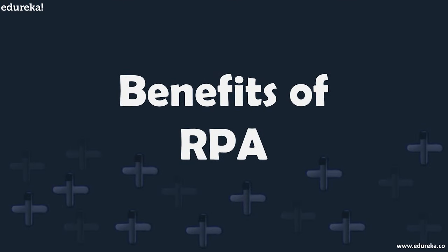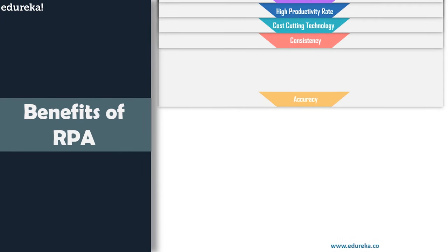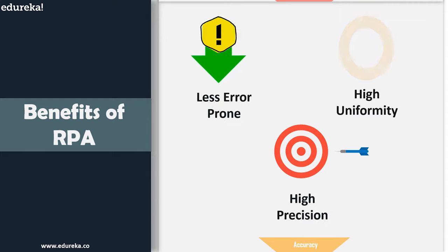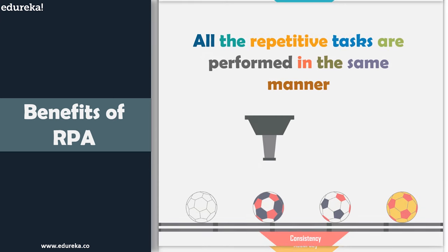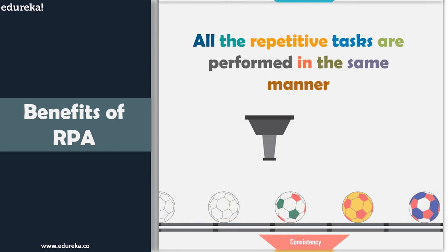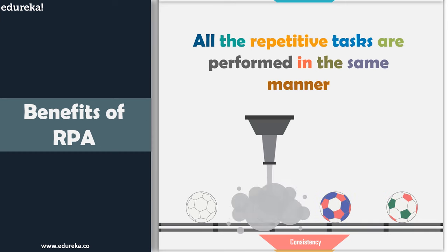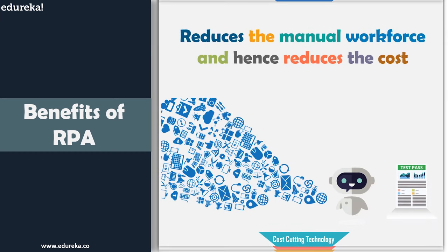Now that we know what RPA is and how it can be applied, let's look at the benefits of RPA. First, accuracy — RPA software is generally less prone to errors and functions with high uniformity and precision. Next, consistency — the software is built so that all repetitive tasks are performed in the same manner even if it is the thousandth time. It also helps in reducing cost, as RPA reduces the manual workforce and hence reduces the cost used to perform any task.